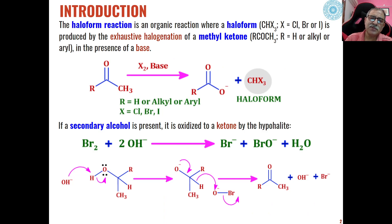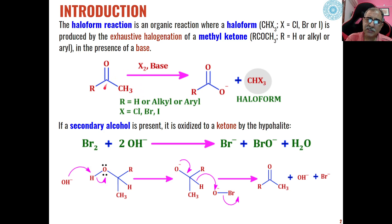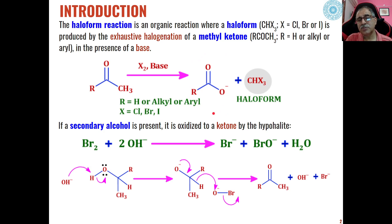The haloform reaction is basically the synthesis of haloforms from the exhaustive halogenation of ketones. The one condition which is must for the formation of haloforms is that the ketone must contain a methyl group. So basically, methyl ketones are converted into haloforms and a molecule of carboxylic acid or its derivative is formed, depending upon the type of base used in addition to the halogens.